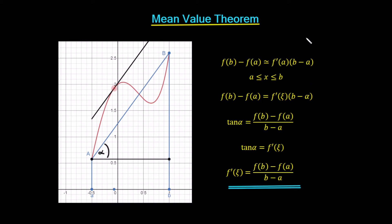The mean value theorem is an extension of this and it allows us to replace the approximately equal to with an actual equality. We're able to do that because it turns out there's always going to be some value zeta — zeta is just an x-coordinate along here, greater than or equal to a and less than or equal to b. When we find this value of zeta and take the derivative at that point times b minus a, we can replace the approximation with an equality.